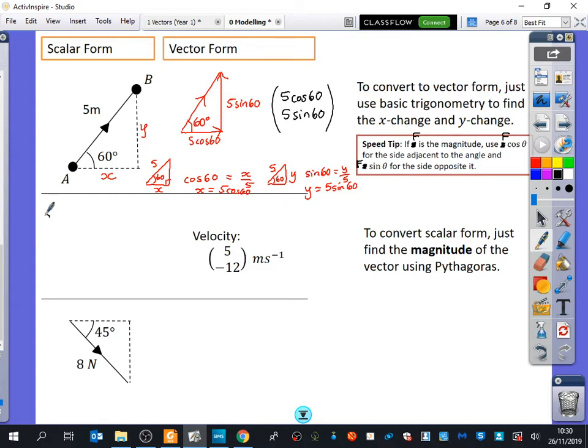Pythagoras can just take the magnitude. So the speed would just be the square root of 5 squared plus 12 squared, which is 13 metres per second.